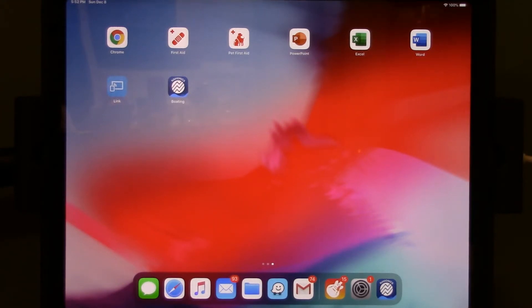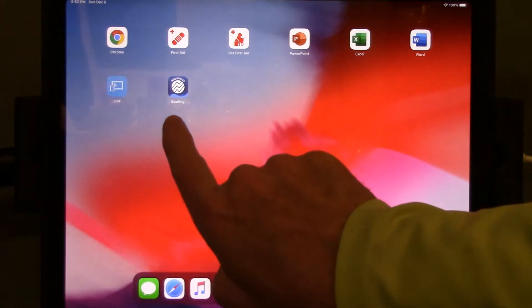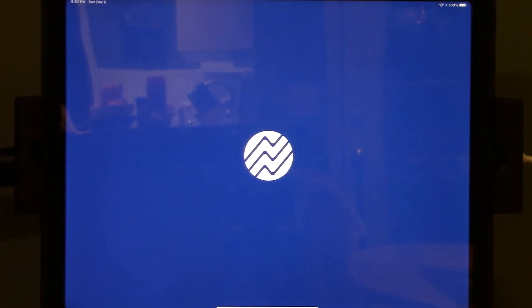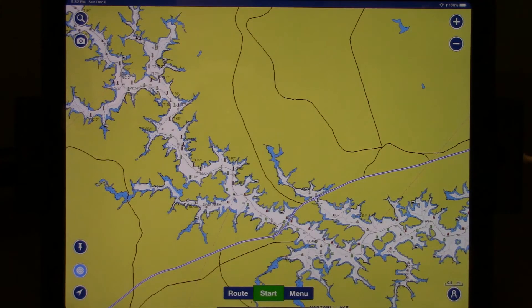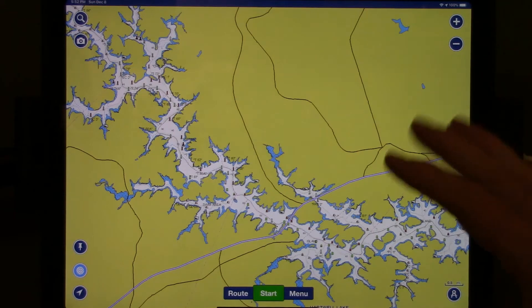To demonstrate some of the capabilities of the Navionics Boating App, the first thing I've done is install that application on my iPad and it creates an icon like this. I'm going to select that icon and launch the application. As soon as the application is launched, it should open up to a picture of a chart.